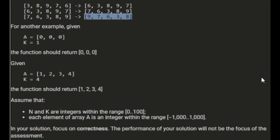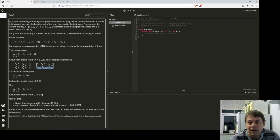I don't see what difference the values are going to make to anything. N integers - there are between 0 and 100 integers. It says in your solution, focus on correctness - the performance will not be the focus of the assessment. Okay, so it's really easy then.